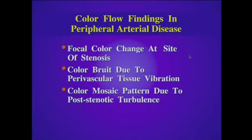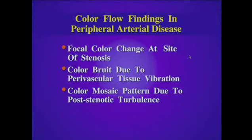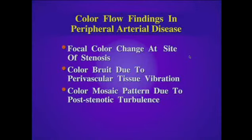There are a number of color Doppler findings that are valuable in the evaluation for peripheral arterial disease. We look for evidence of focal color change or aliasing at the site of stenosis. Another helpful sign of significant disease is the color bruit artifact, which is due to perivascular tissue vibration and is typically seen in systole overlying a lesion — usually either a high-grade stenosis, pseudoaneurysm, or arteriovenous fistula. We'll also see a color mosaic pattern when there is post-stenotic turbulence.